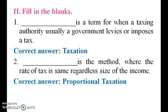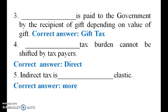Taxation is the term for when a taxing authority, usually a government, levies or imposes a tax. A method where the rate of tax is the same regardless of the size of income is proportional tax. Tax paid to the government by receipt of a gift, depending on the value of the gift, is a gift tax.